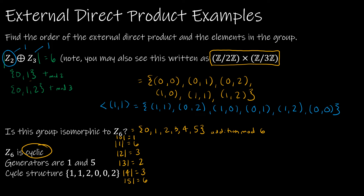So is Z2 cross Z3 cyclic? Yes, it is — I've just shown it is generated by (1,1). Is Z6 cyclic? Yes. Since both groups have the same number of elements and are both cyclic, they are isomorphic.